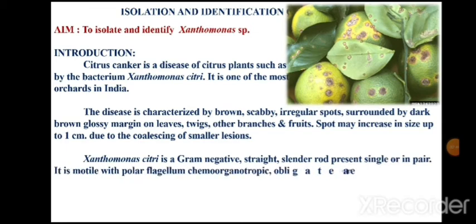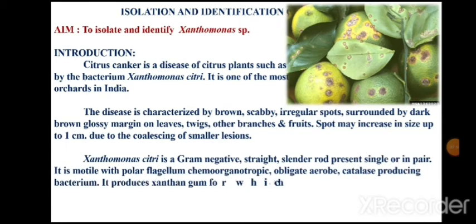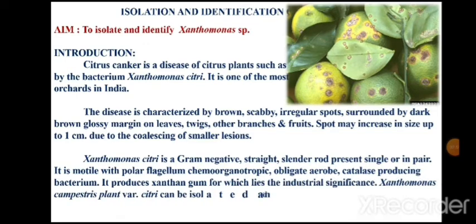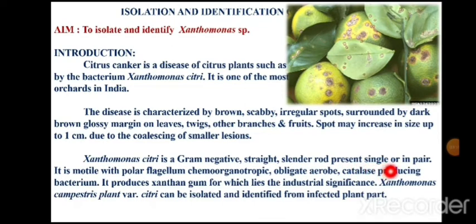Xanthomonas citri is a gram-negative, straight, slender rod-shaped bacterium which exists in pairs or as single cells. It is a motile organism with a polar flagellum and is an aerobic organism. It produces catalase, meaning it is catalase positive. An important feature of this bacterium is that it produces a gum called xanthan gum, which is a type of polysaccharide. This xanthan gum is of industrial importance.